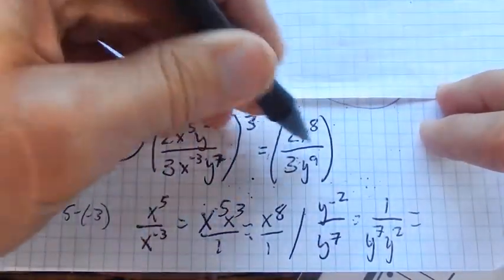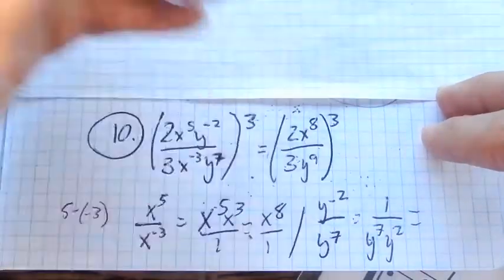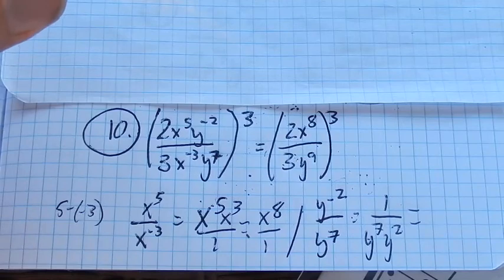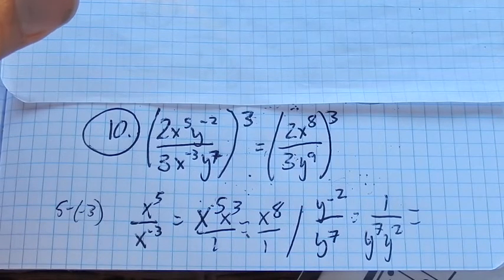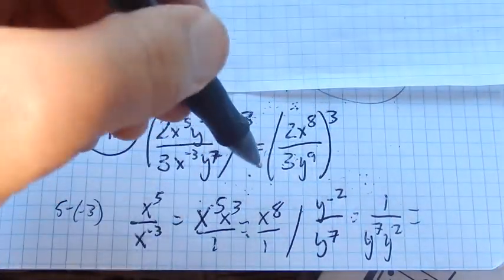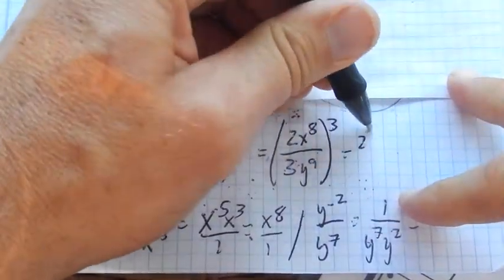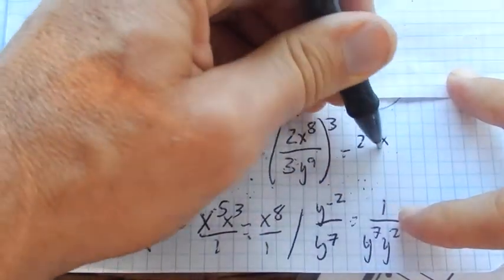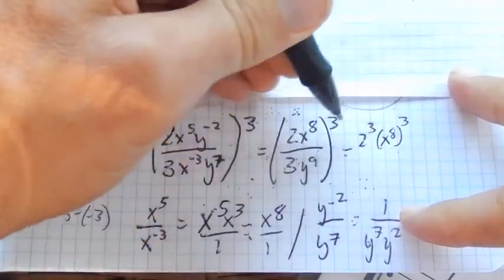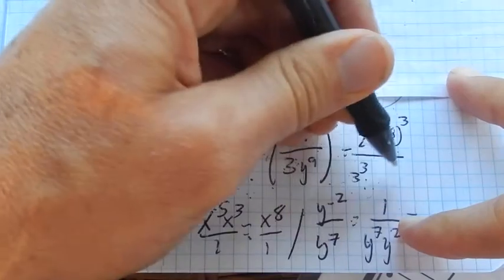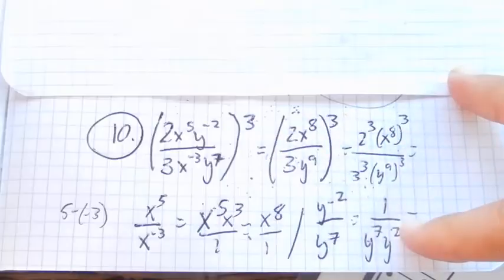I've simplified as much as I can in here, and the whole thing is still cubed. So that's good news for me. Now what I can do is just cube everything in here. Basically I have two cubed times x to the eighth cubed over three cubed times y to the ninth cubed. Everything's taken to that third power.